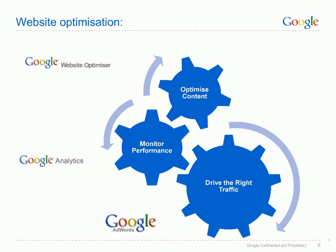This diagram shows three stages necessary for website optimization, a continuous process which should be examined regularly on an ongoing basis. Number one is driving the right traffic. You spend a lot of time driving visitors to your website through a host of different mechanisms — AdWords, organic, direct, banner ads — so you need to make sure it's the right kind of traffic.